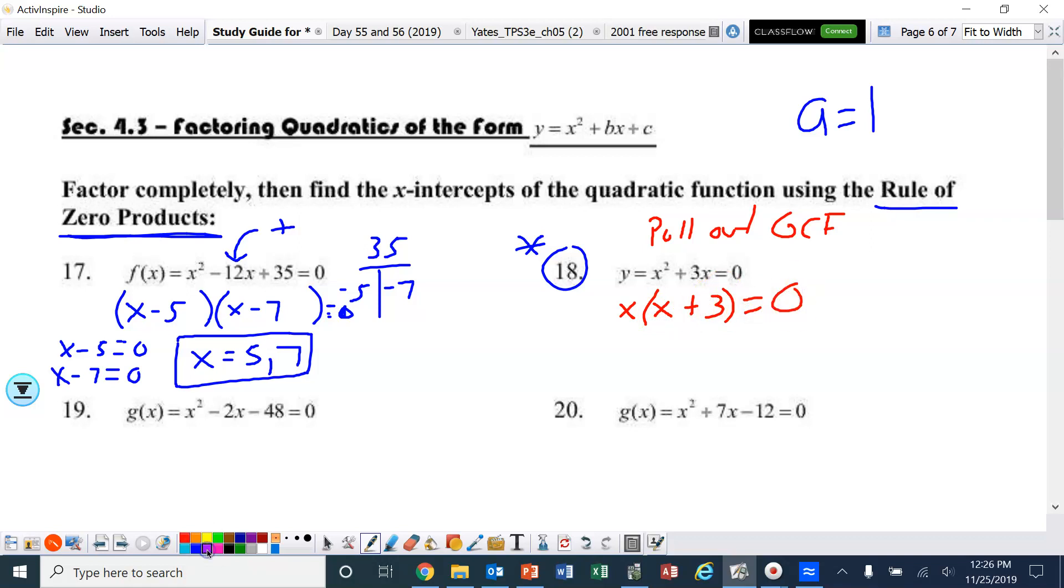Now, when x is by itself like that, ladies and gentlemen, that means that it is 0. 0 times anything is 0. And then what makes the x plus 3 equals 0? Well, that would be negative 3. That's it. We're done.